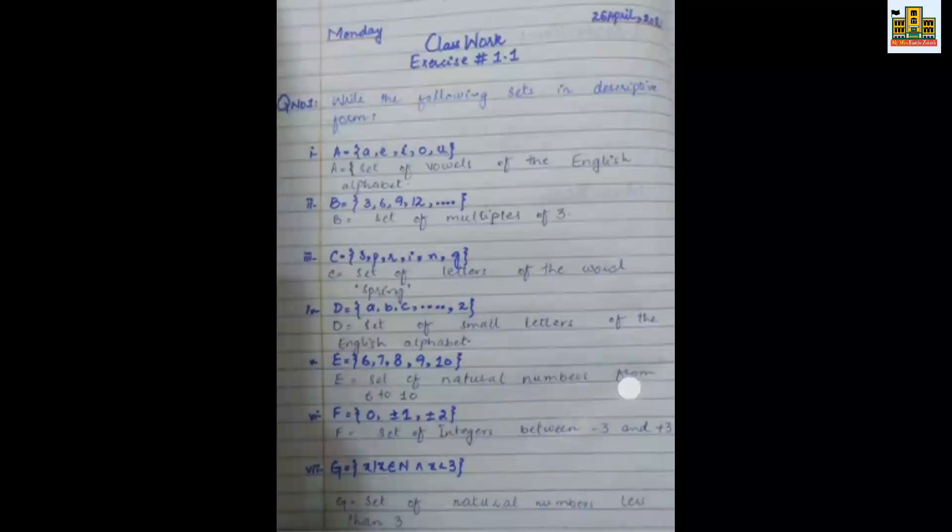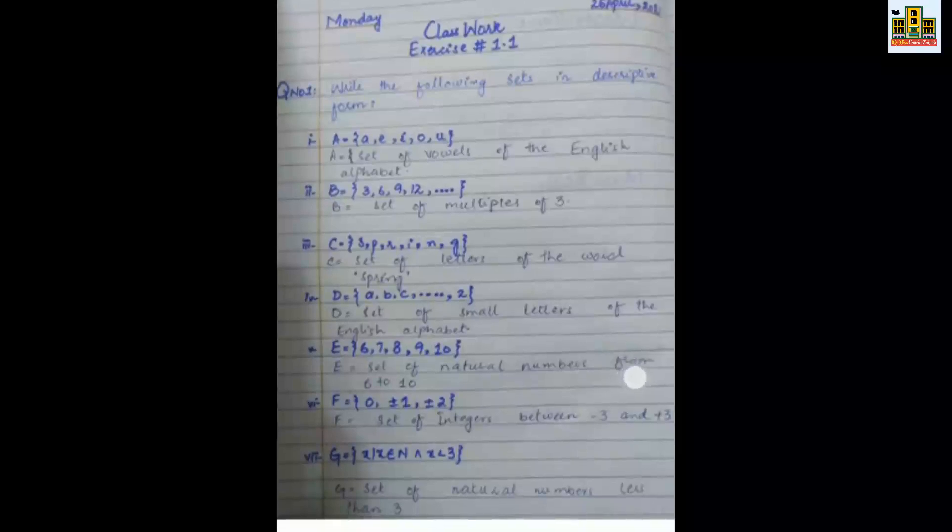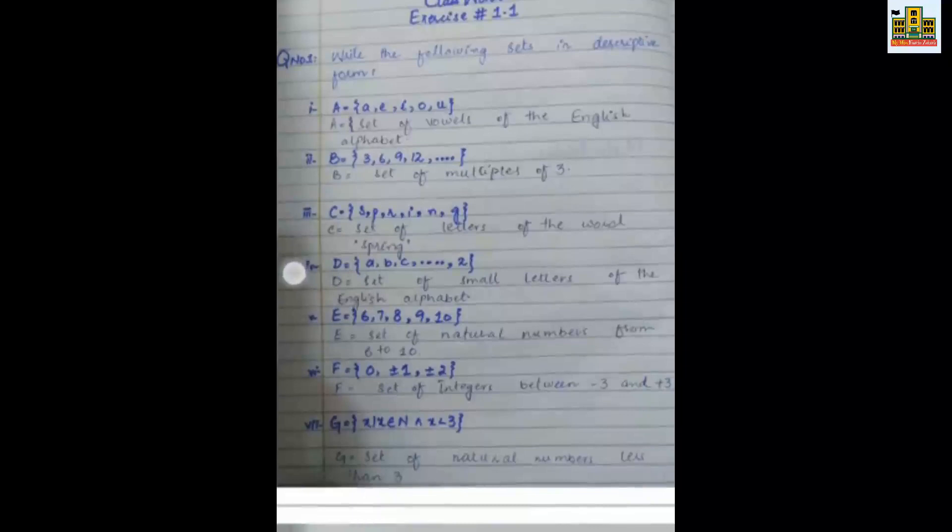Why we will define this, so we will say that you have set of vowels of English alphabets. Same as it is in question number two, what we have B, you have values given: three, six, nine, and twelve. Set of multiples of three. You have to know three table. You have to describe this. You can also describe the table of three, but this is an infinite set.